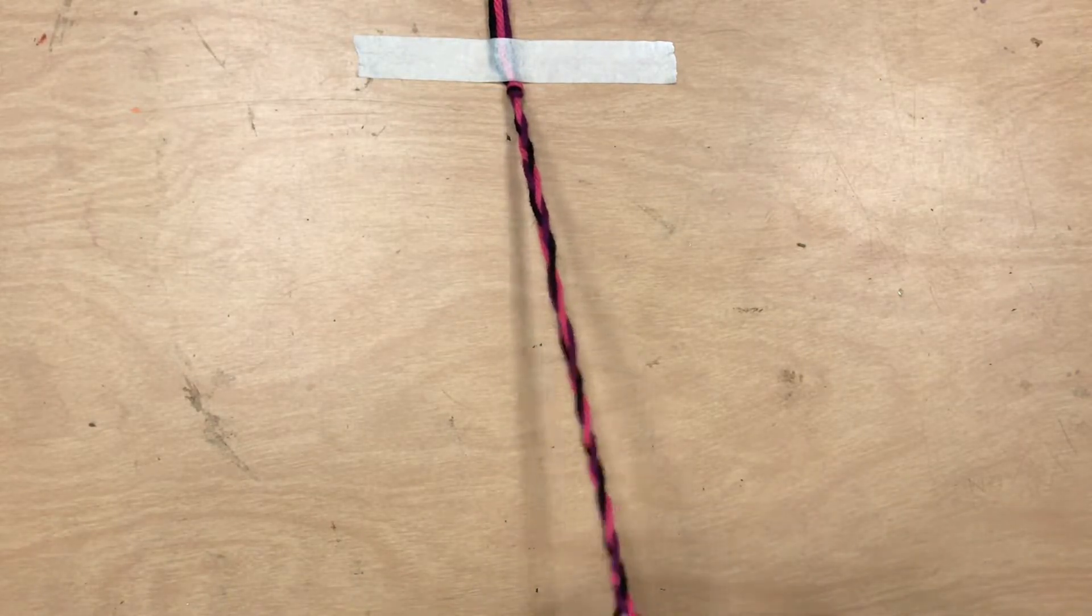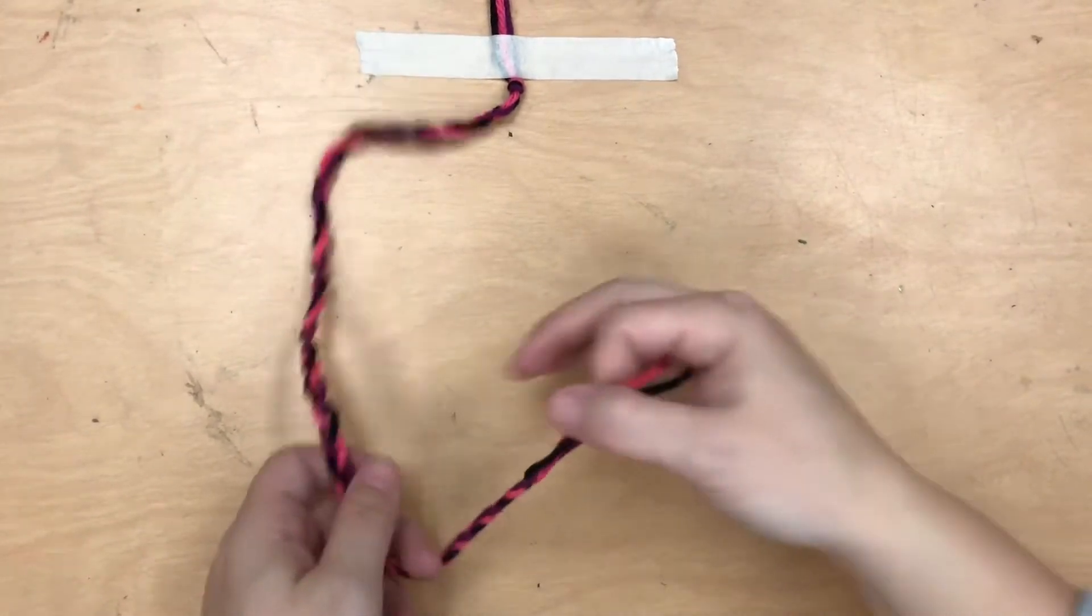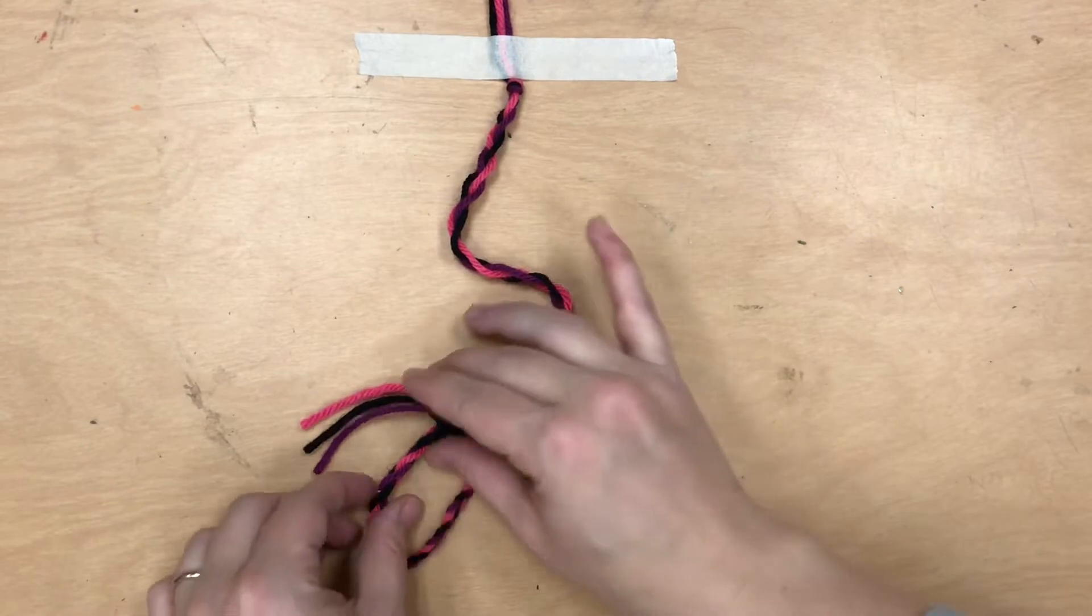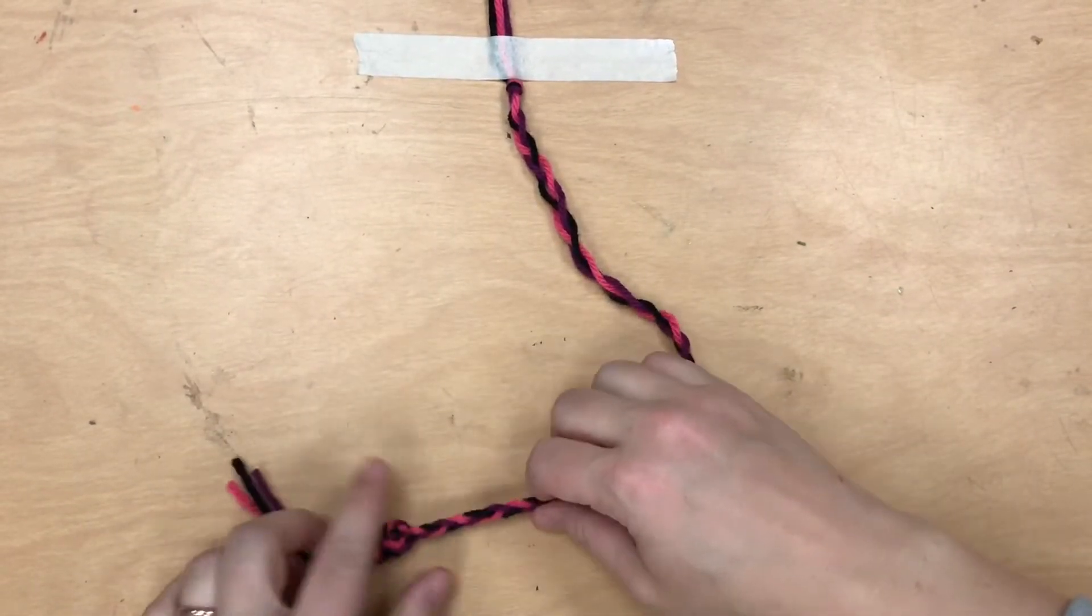So I'm braiding for about eight inches here and then it comes time to make another knot, and I do it the same way. I make a big loop and then I bring the ends through the back of that loop and pull tight.